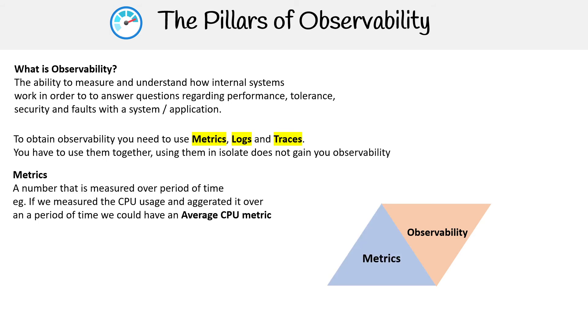The first thing is metrics. That is a number that is measured over a period of time. If we measure the CPU usage and aggregate it over a period of time, then we would have the average CPU metric.